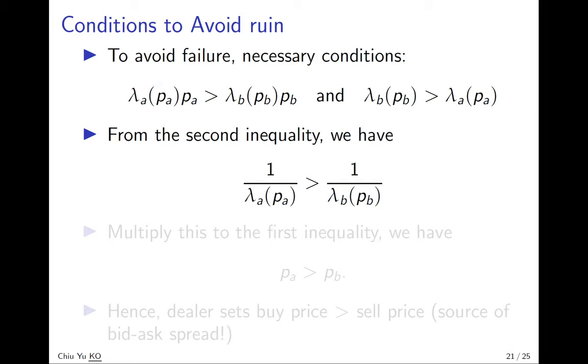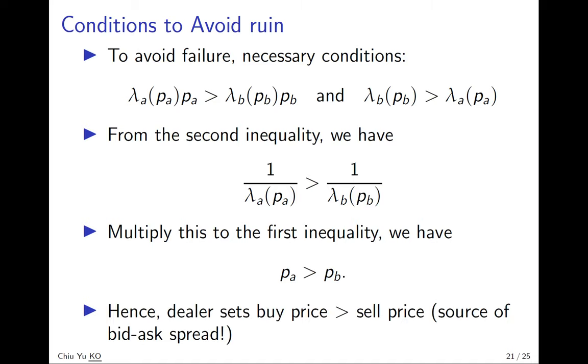Then you have this function, and because everything is positive, you can multiply left hand side on the left hand side, and what you're left with is P A bigger than P B. Which means what we want to prove is the dealer wants to set buying price higher than selling price, and to do so is to avoid being ruined.